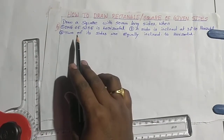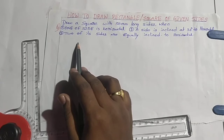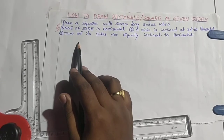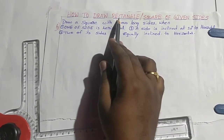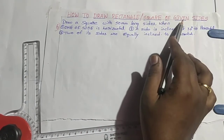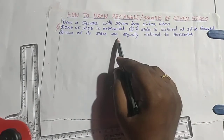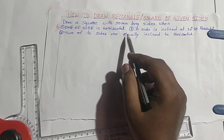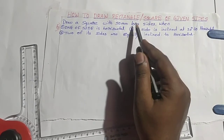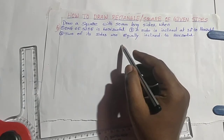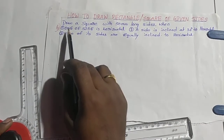Hi, good morning to one and all. My name is Raman Shanelu. Today I am going to explain how to draw a rectangle or square of given sides. In this video I am going to explain how to draw the square — the same procedure you can use for rectangle also.